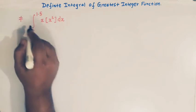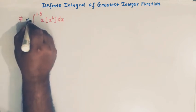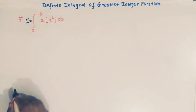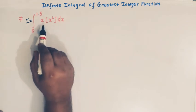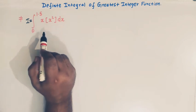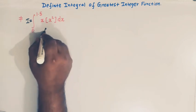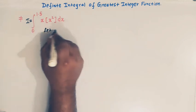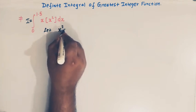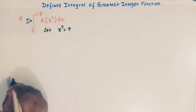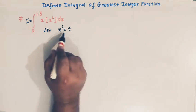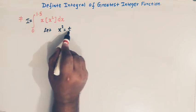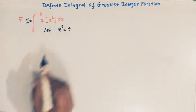So let us call this integral as I. Now let us apply the substitution method for evaluating the integral. Let us substitute x squared equal to t. Here we are taking a new variable t, where x squared is equal to t.